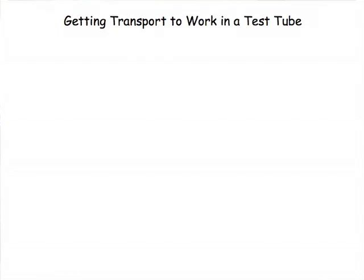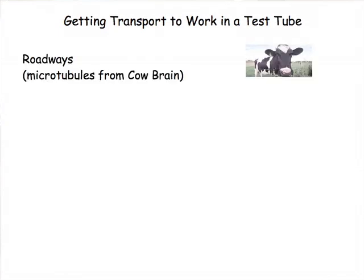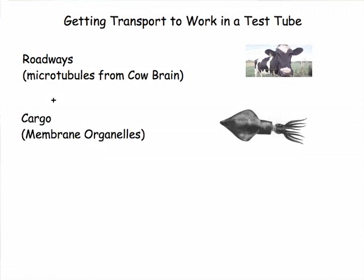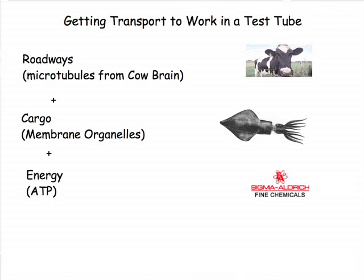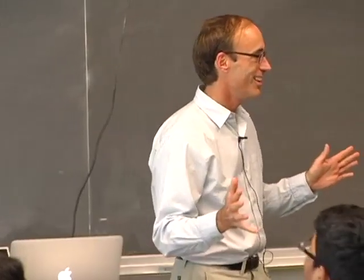Here's the experiment to find the motor — taking everything apart and putting it back together. We knew the roadways were microtubules; we could purify them and add them to a test tube. We needed cargo — mitochondria and such — which should move along the roadways. The motor should be there as long as we gave it an energy source like ATP. Unfortunately, it didn't work.